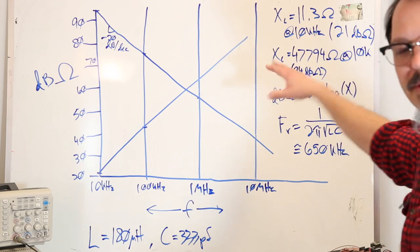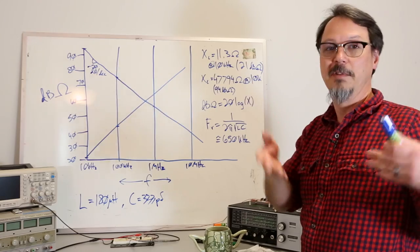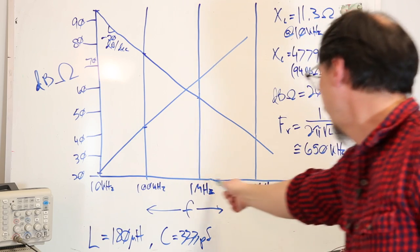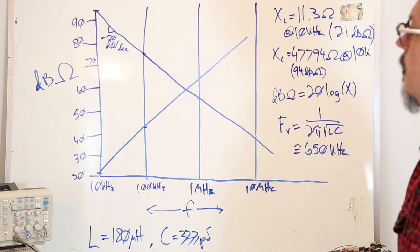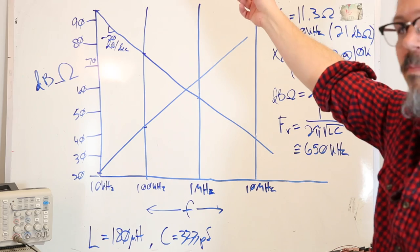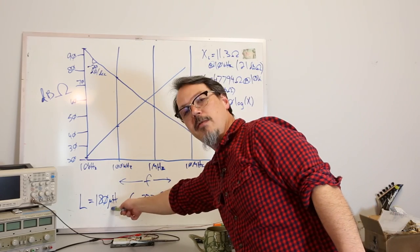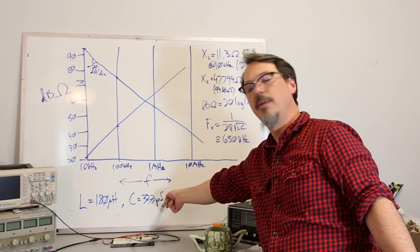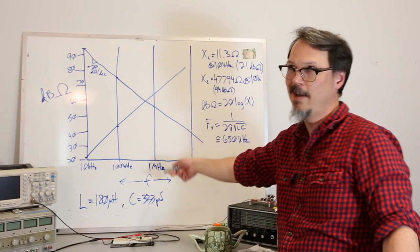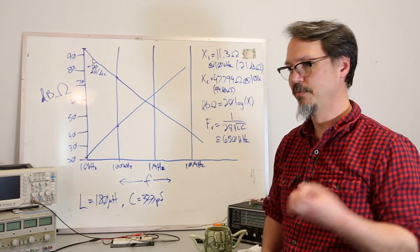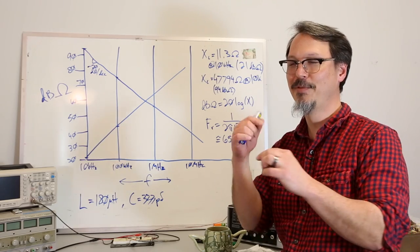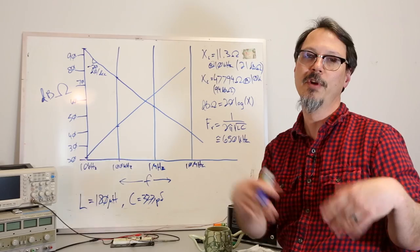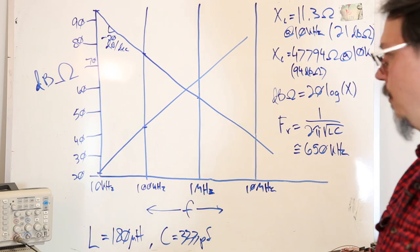This is a Bode plot, which you may or may not be familiar with. This is a plot of logarithmic frequency versus logarithmic ohms, dB ohm. 180 microhenry inductor I've got, and I've got a 333 picofarad cap, which is three 1 nanofarad caps in series. With regard to resonance...